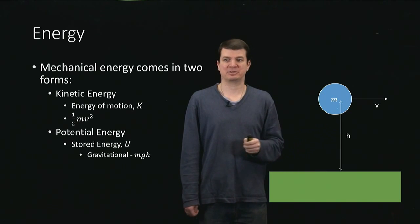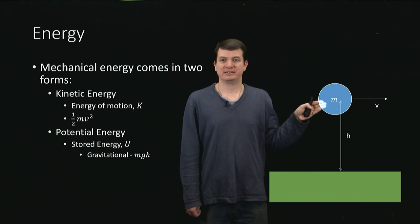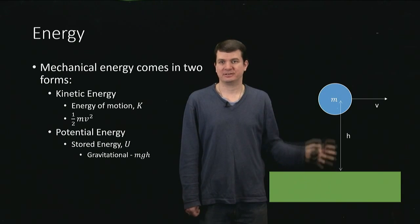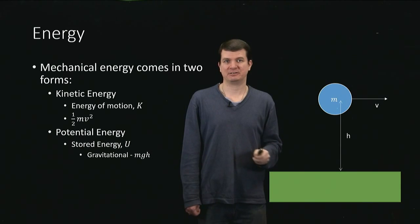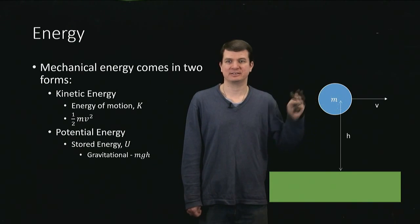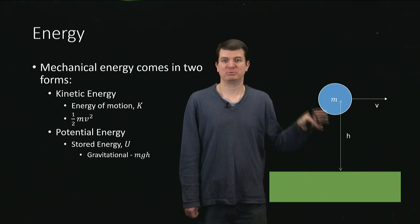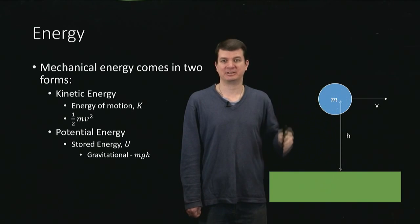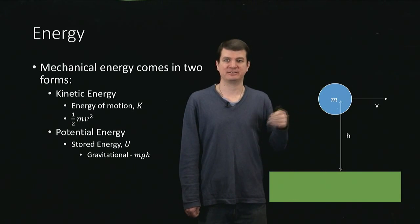And here I'll make clear what I was speaking about earlier, that this energy really is part of the system's energy. I need the mass and the earth in order to have this gravitational potential energy. So it doesn't belong just to the mass, and it doesn't belong just to the earth. It belongs to this particular configuration of the mass and the earth.